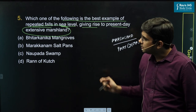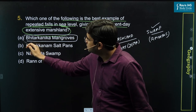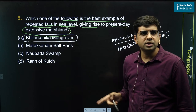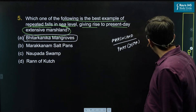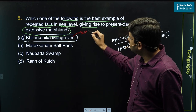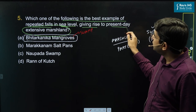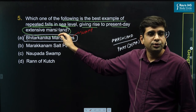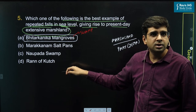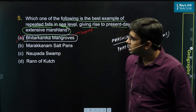Now let's look at the options. Option A is Bhitarkanika mangroves, which is present in Odisha. This can be eliminated because mangroves grow in swamps, not in marshes. The question is asking for an extensive marshland, not a swamp. Consequently, we are eliminating option A.